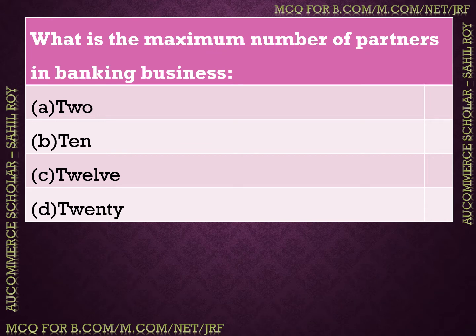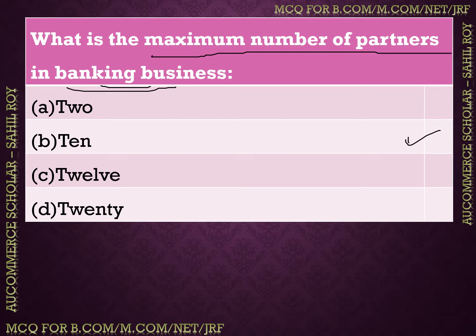The next question: what is the maximum number of partners in a banking business? The Partnership Act 1932 did not specify the number of members; that was specified in the Companies Act 1956, which stated: minimum 2 members, maximum 10 in banking business and 20 in any other form of business. So the answer is 10 — according to Companies Act 1956.